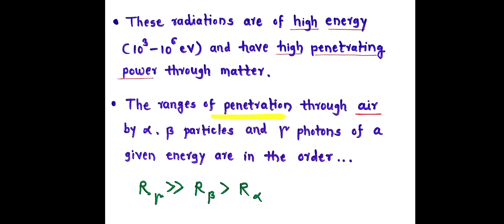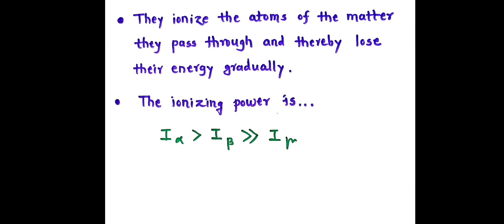The ranges of penetration through air by alpha, beta particles, and gamma photons of a given energy are in the order: the range of gamma is very, very greater than the range of beta, and it is greater than the range of alpha. They ionize the atoms of the matter they pass through and thereby lose their energy gradually.